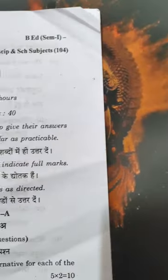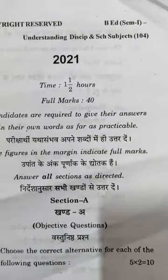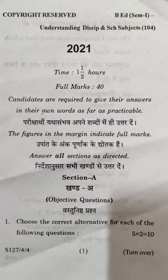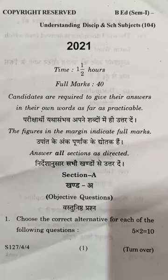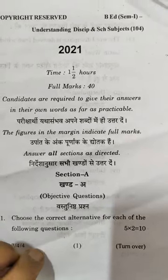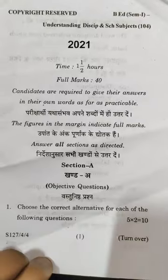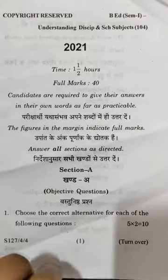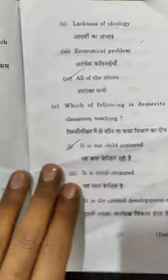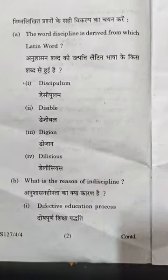Next is Understanding Discipline and School Subject. Time allotted is one and a half hours. Section A has objective type questions — five questions, two marks each.